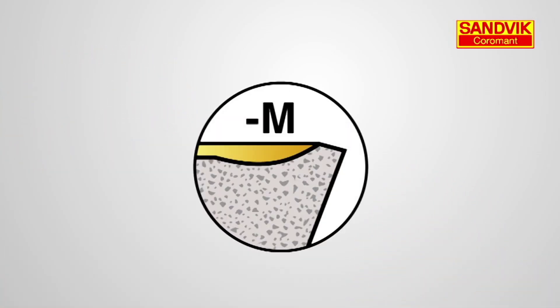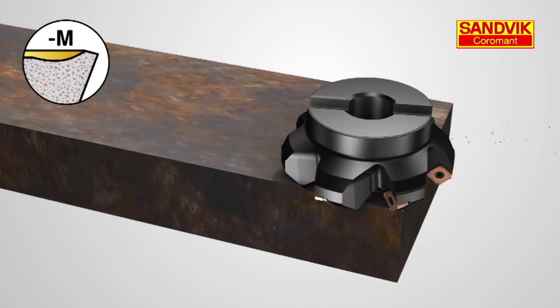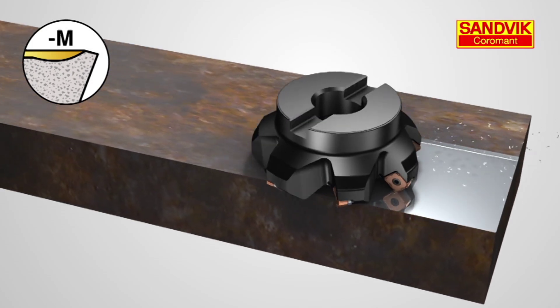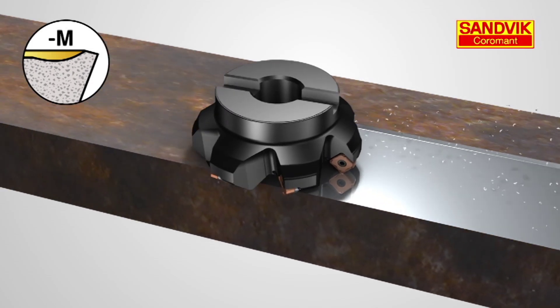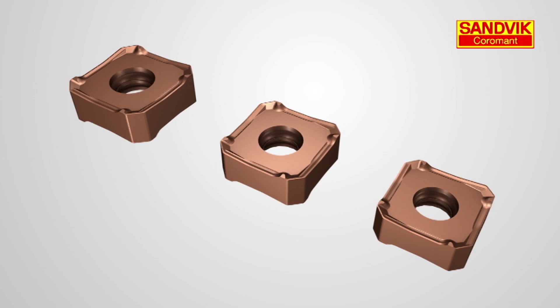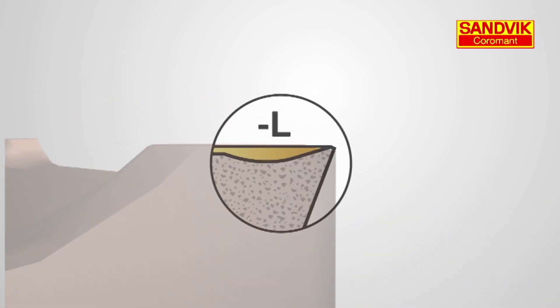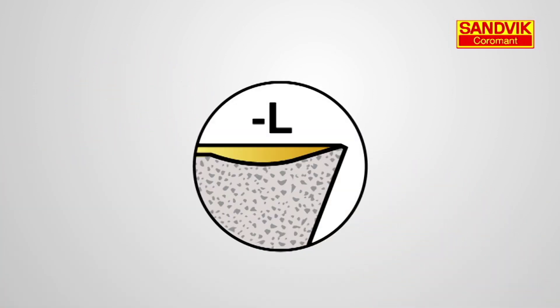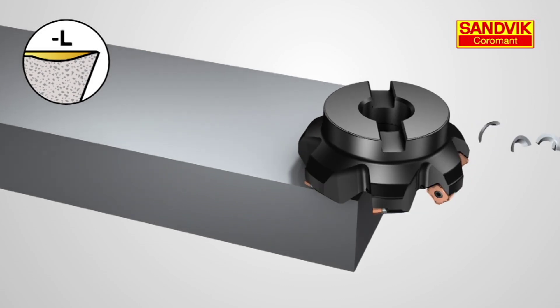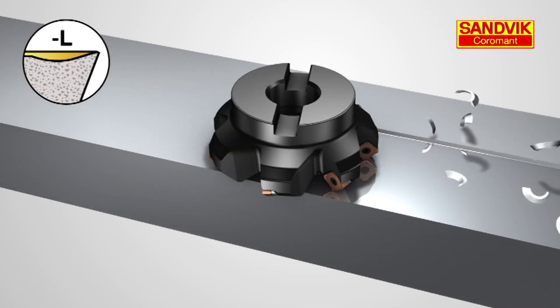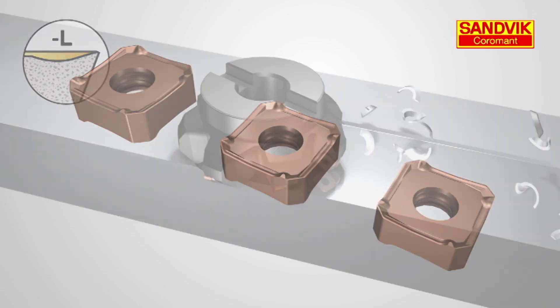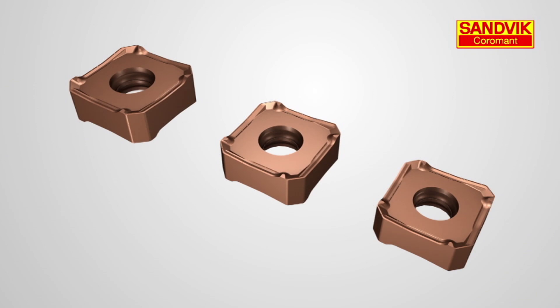M or medium geometry should always be your first choice for general purpose machining and mixed production. L or light geometry is best suited for light cutting operations and generating surface finish. It has a sharp positive cutting edge and generates low cutting forces.